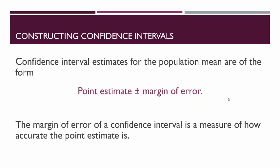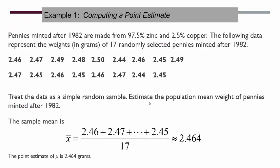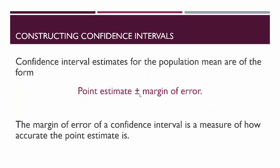Confidence interval estimates for a population mean are of the form: take your point estimate x-bar, and then add and subtract what's called the margin of error. The margin of error is made up of two things: a critical value and the standard error. The margin of error is basically a measure of how accurate the point estimate is — a smaller margin of error means the point estimate is more accurate, while a larger margin of error indicates it isn't as accurate.